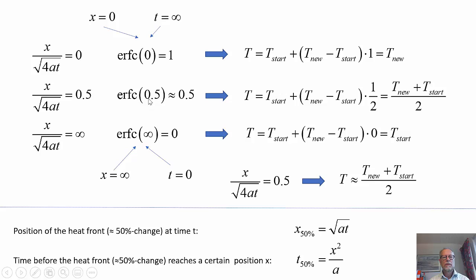The complementary error function is around 0.5 for the argument 0.5. That means that we reached half the total change when the argument is 0.5.